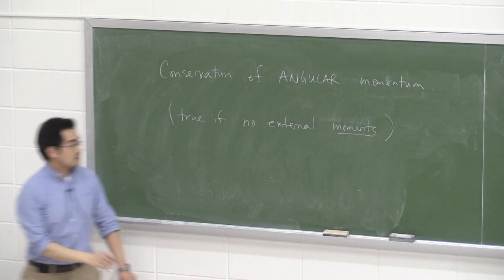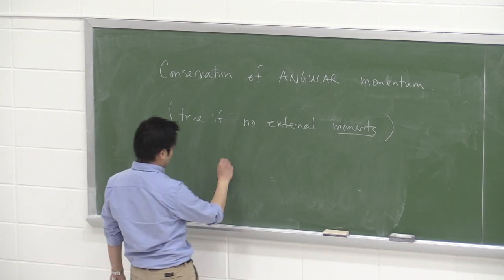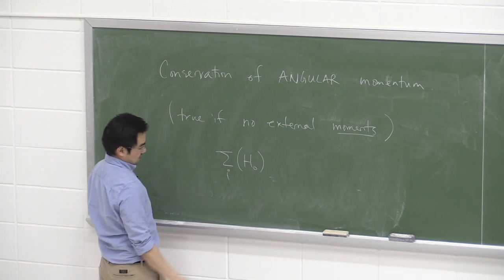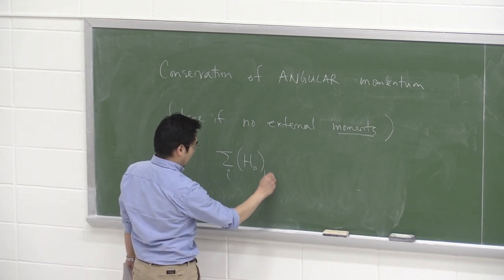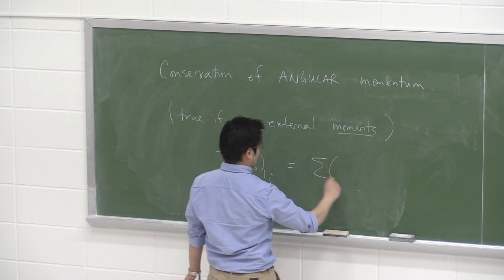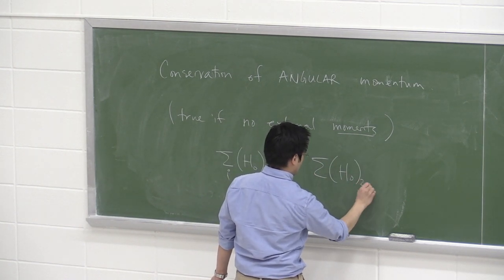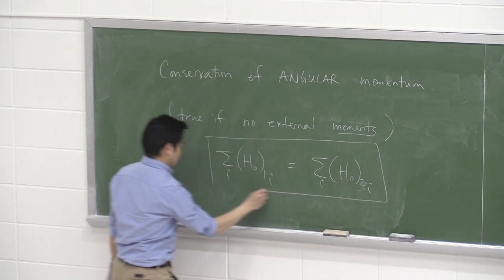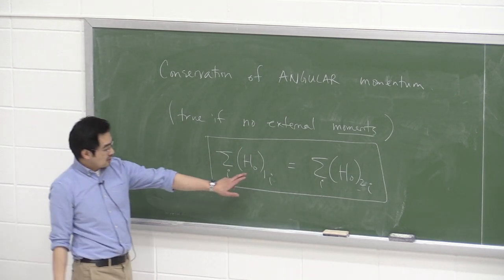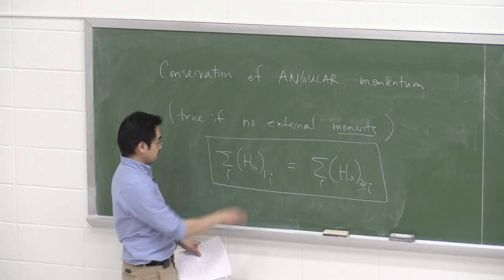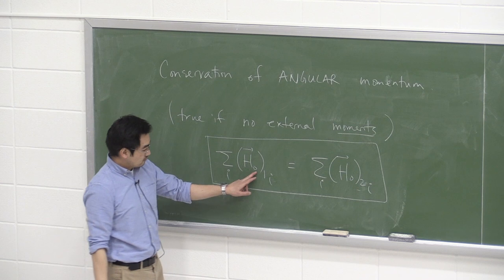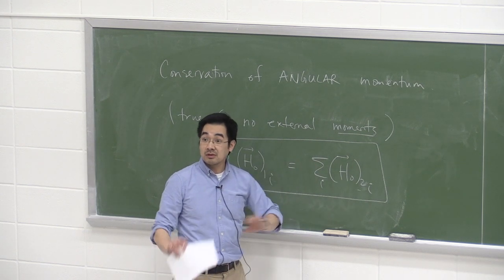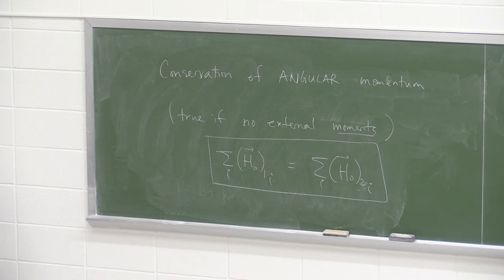Conservation of angular momentum is true when there are no external moments — just as conservation of linear momentum requires no external forces. Summing across all particles i: the sum of H_O1 for all i equals the sum of H_O2 for all i. Angular momentum around axis O at time 1 for all particles equals angular momentum at time 2.